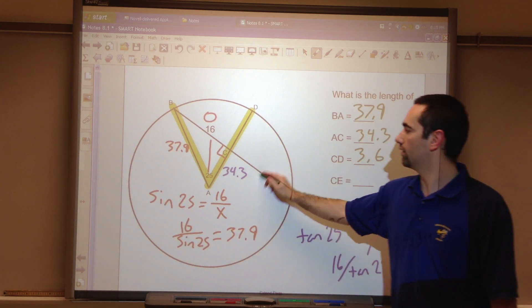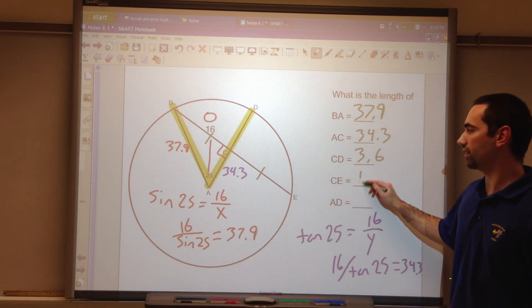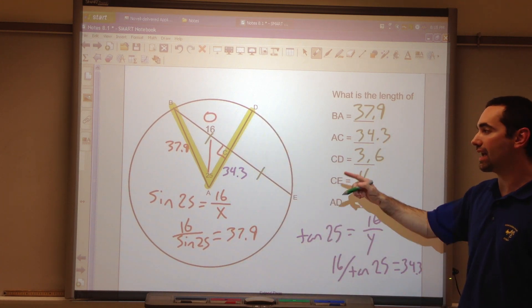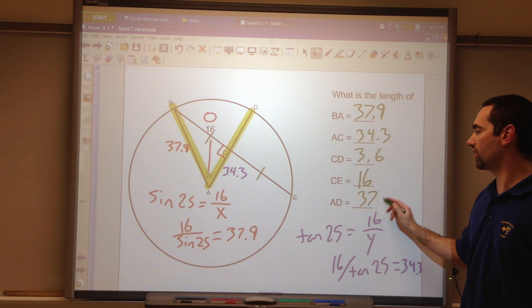CE. Those two segments are congruent. 16. AD is the radius. Therefore, it's congruent to AB. 37.9.